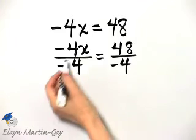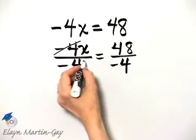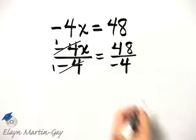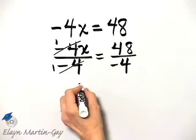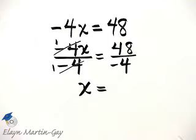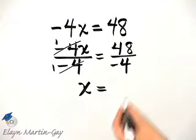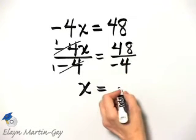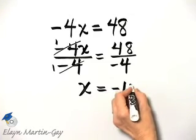And why did I do that? Because look, the negative 4's divide out, and I have 1X over 1, which is simply X, so I have X by itself is equal to 48 divided by negative 4, and that is negative 12.